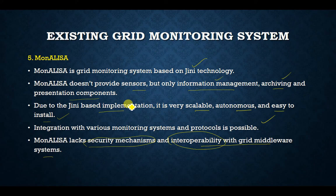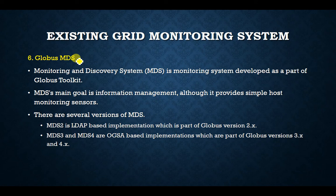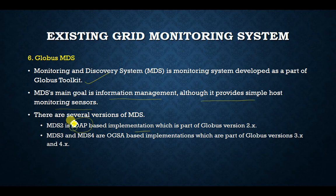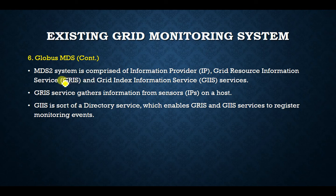The sixth system is Globus MDS — Monitoring and Discovery System — developed as part of the Globus Toolkit and present in most grid infrastructures. Its main goal is information management, though it provides simple host monitoring sensors. Versions include MDS2 (LDAP-based, part of Globus 2.x), and MDS3 and MDS4 (OGSA-based, part of Globus 3.x and 4.x). MDS2 comprises three components: Information Provider (IP), GRIS (Grid Resource Information Service), and GIIS (Grid Index Information Service).